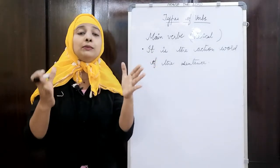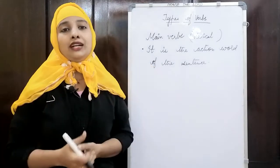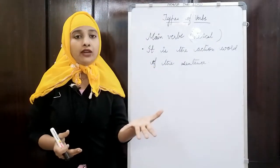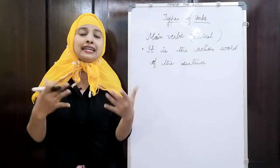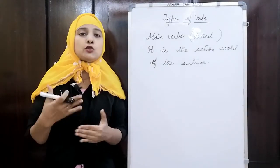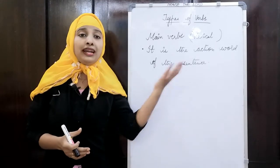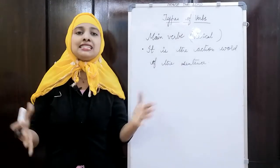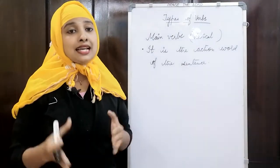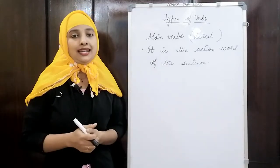Main verbs denote action and will be easily identified in a sentence. If there is a main verb in a sentence, we can directly identify it based on its action — by just looking at it. Moreover, main verbs can stand alone; they don't need any supporting verbs.